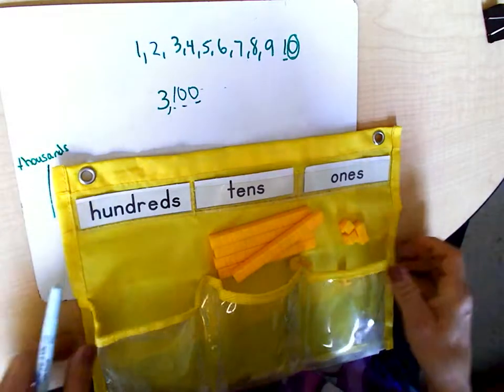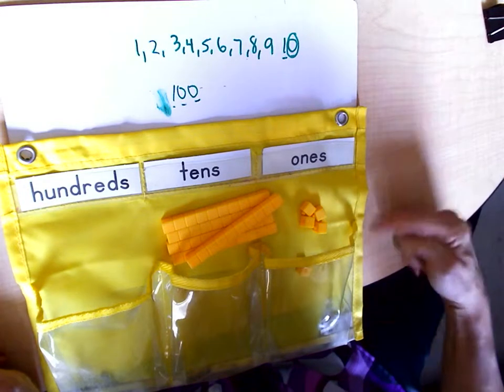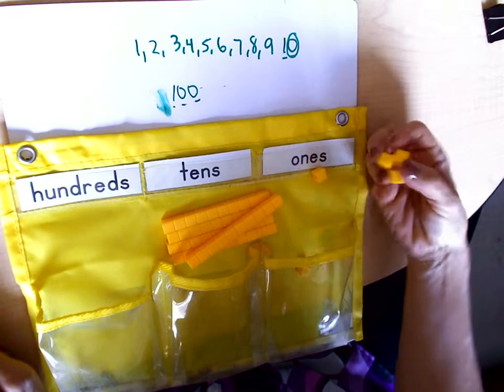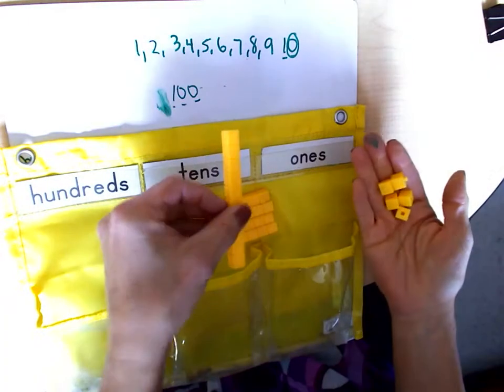But when we're talking about the ones, tens, and hundreds, we're talking about these numbers right here. And so these would be the ones. And once I get ten of these, then I can change it out for one of these.